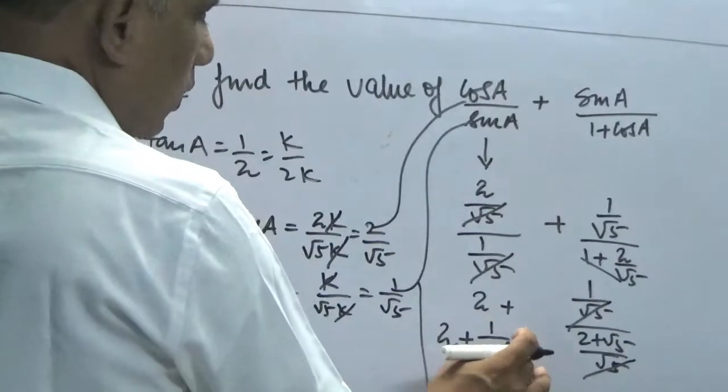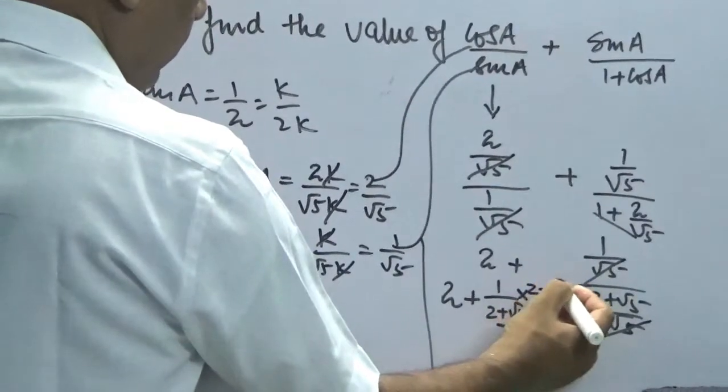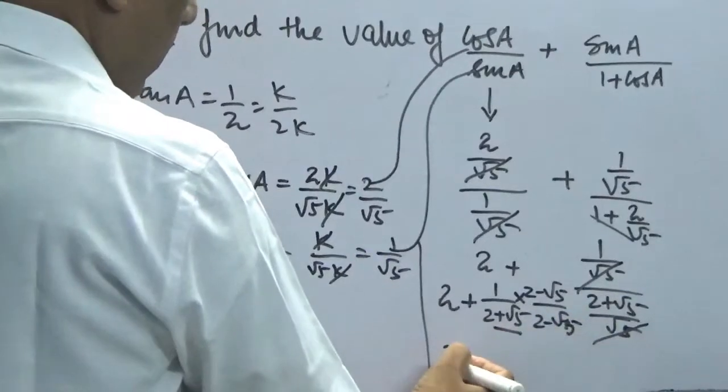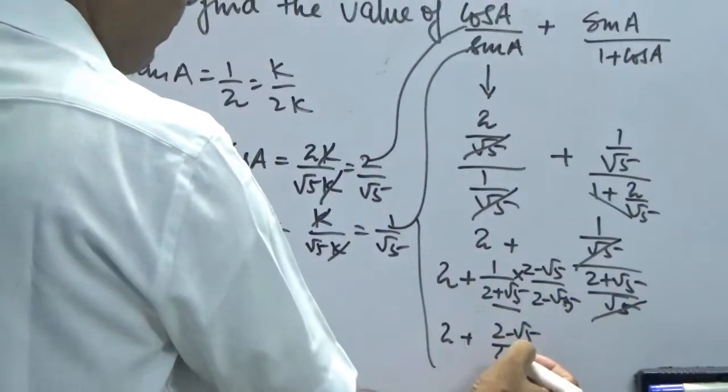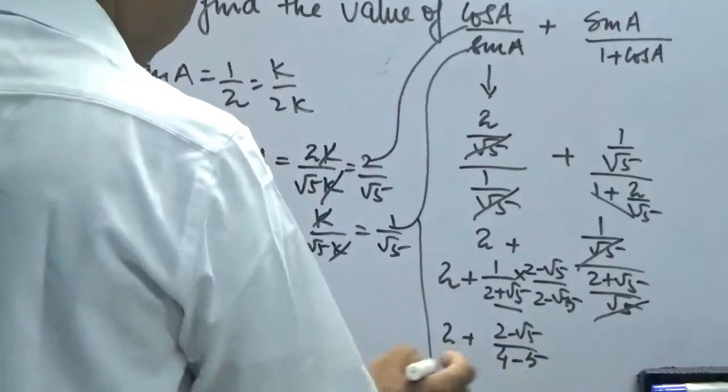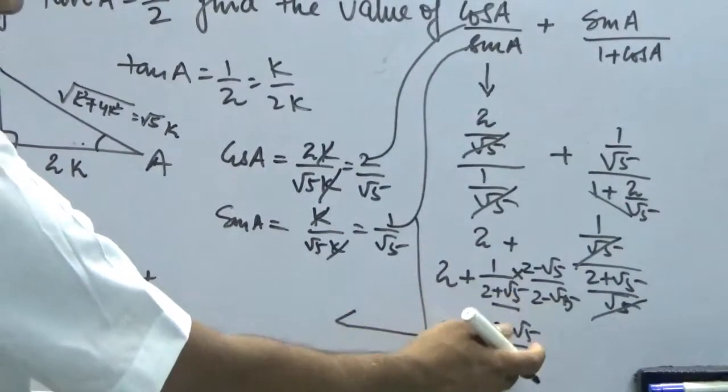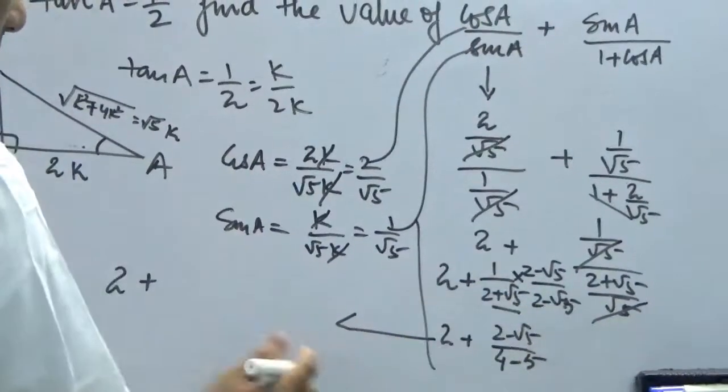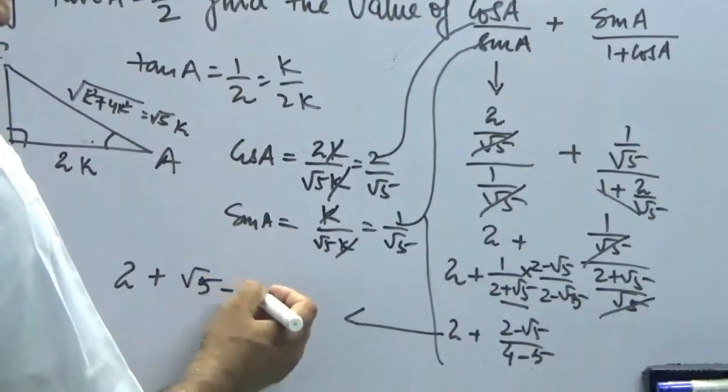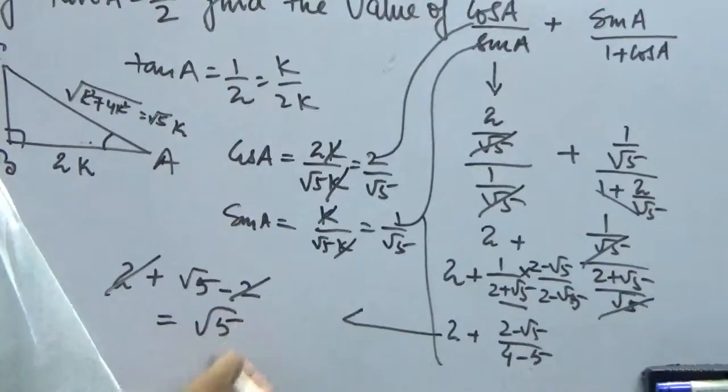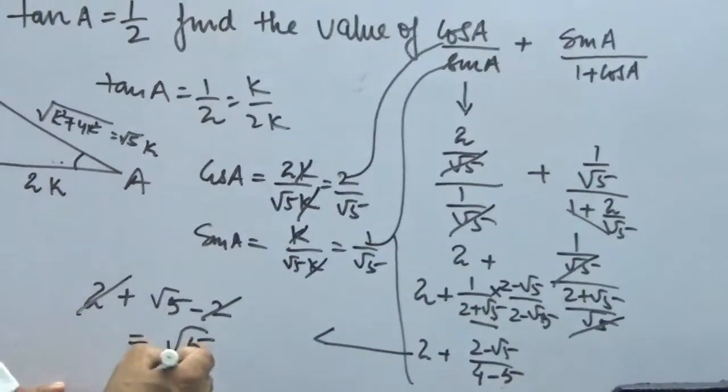Now this root 5 has come in the denominator, so this can be rationalized with the help of its conjugate. We have to do that by multiplying (2 - √5)/(2 - √5). That will be 4 - 5. So finally we will be left with (2(2 - √5))/(4 - 5), which is -1. And this minus sign when multiplied gives us √5 - 2. This gets cancelled and we will get the value of cos A/sin A + sin A/(1 + cos A) as √5.